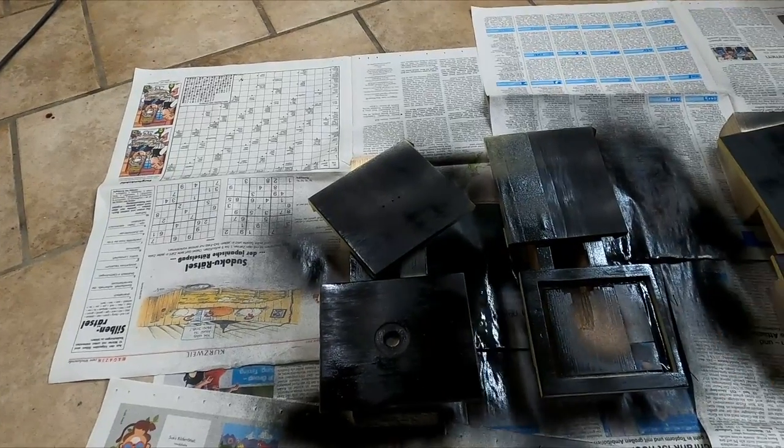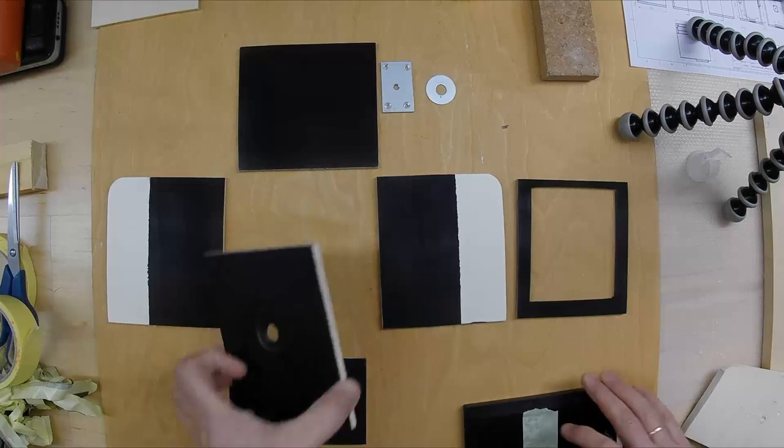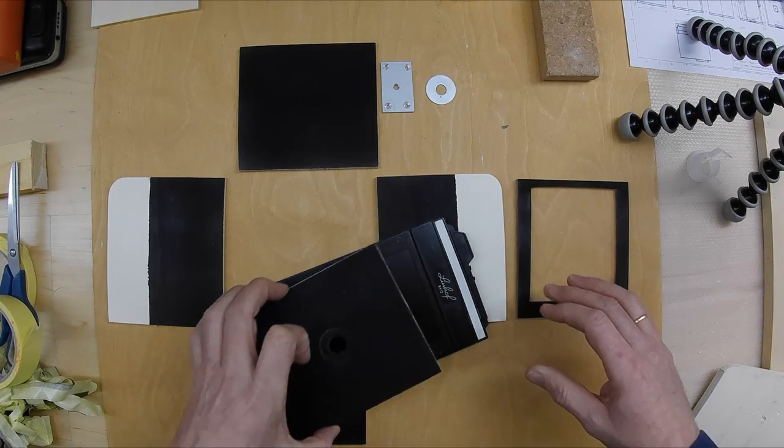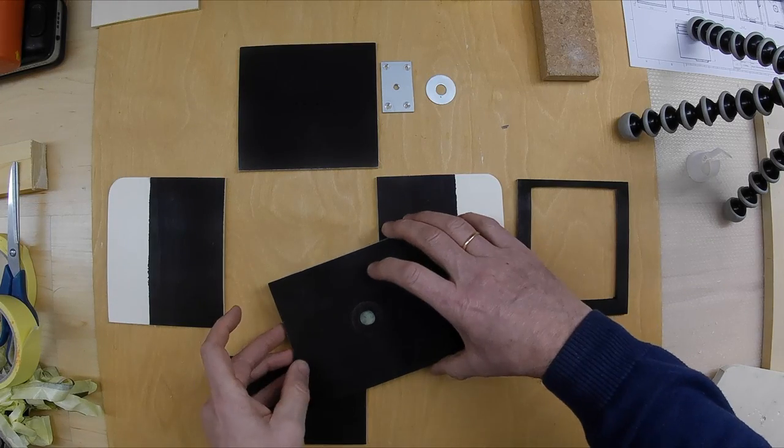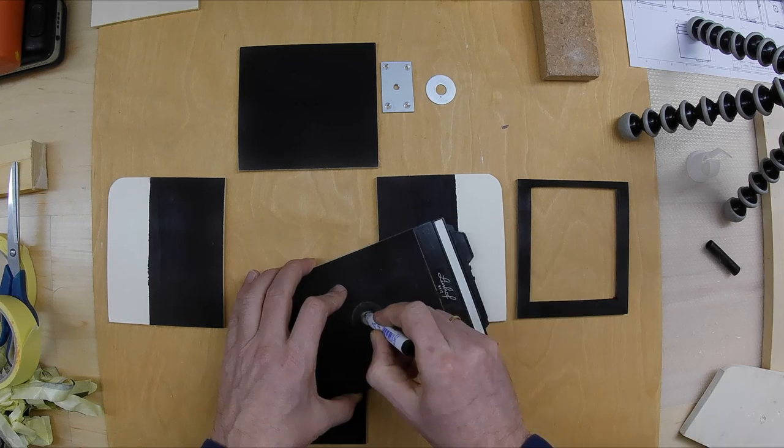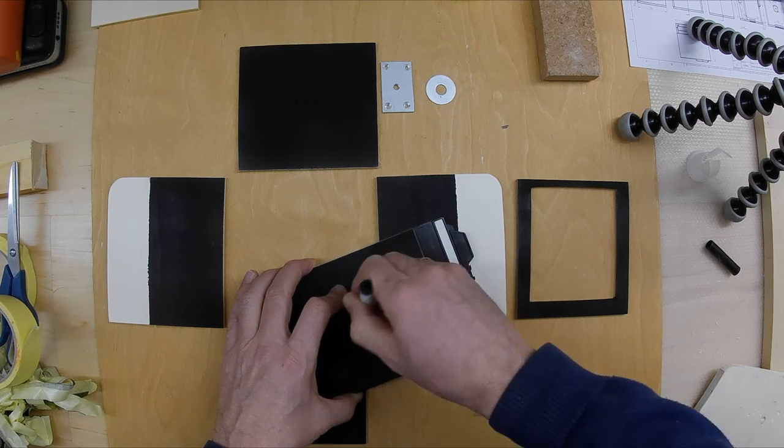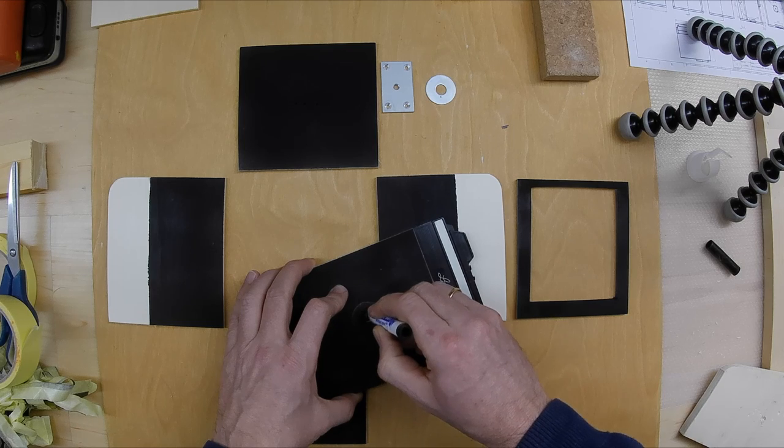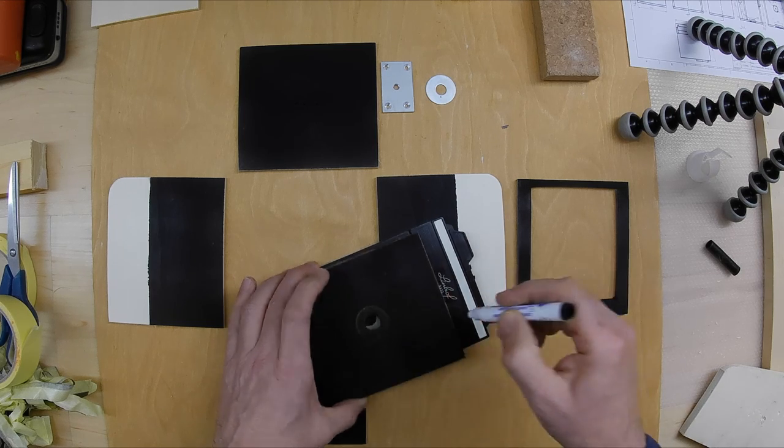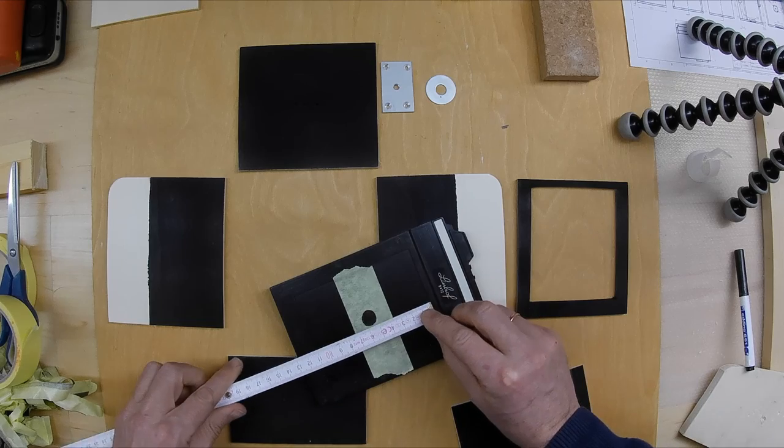It is not wrong doing this two times or three times, just let the paint dry in between. This is now just a cross-check if the hole of the pinhole front element is also in the center of the film plate, and we will see that it works quite good.